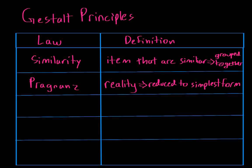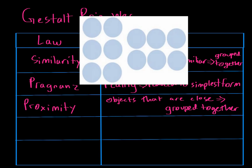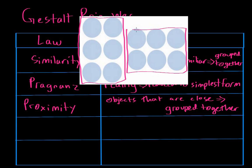The third Gestalt Principle is the law of proximity, which basically says that objects that are close to one another are grouped together. Let's look at an example. Over here we see a bunch of circles. When you look at this image you naturally notice a rectangular pattern of circles, and then another rectangular horizontal pattern of circles.